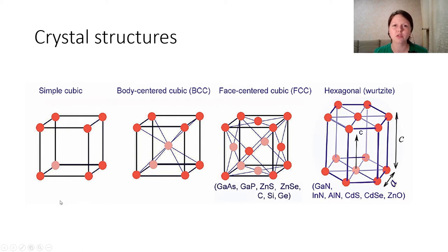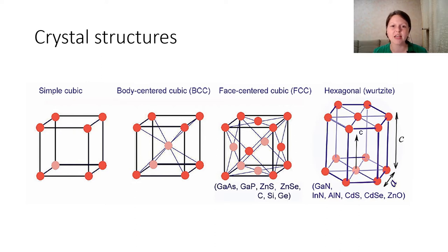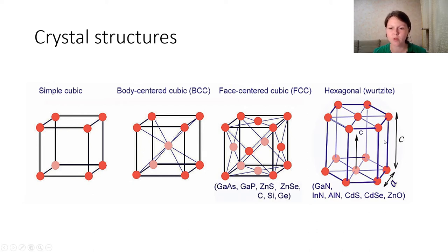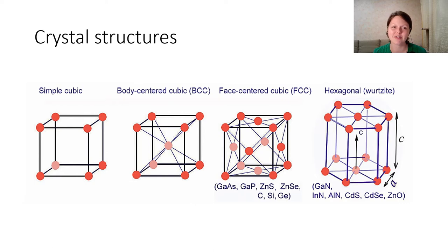The first one is a simple cubic structure. The second is the body-centered cubic structure, which differs from the first one only by this additional atom right in the center of the cube. The third one is the face-centered cubic structure, which differs from the simple cubic structure by adding atoms on the faces of the cube. And the last one is the hexagonal crystal structure. Here you can also see the semiconductors which have the corresponding crystal structures.